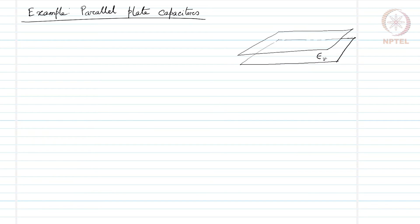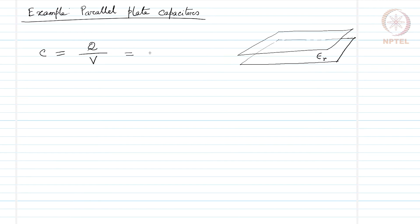The electric field is confined to the space between the plates and is not outside. With this dielectric filling, the capacitance equals the total charge on each plate over the potential difference that is developed, and this becomes epsilon_r times the capacitance if there were vacuum between the two plates. That means we are increasing the capacitance of this parallel plate capacitor by putting a dielectric material in between.